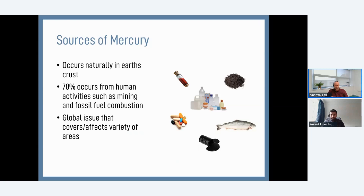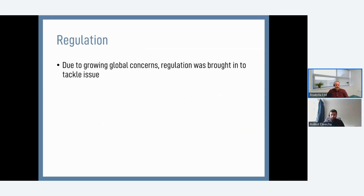These human sources can be from mining, cement manufacture, and fossil fuel combustion. Mercury is an issue that affects the globe across a variety of areas — in our ecosystem through rivers and seas, bioaccumulating in fish and getting into the human ecosystem, making it a clinical problem. There are also issues in manufacturing petrochemicals, pharmaceuticals, and plastics, as well as contaminated land. It covers a very wide range of sample types and a very wide concentration of mercury content. Because it is such a big global issue, it was heavily regulated from the 1960s onwards by environmental protection agencies around the world.